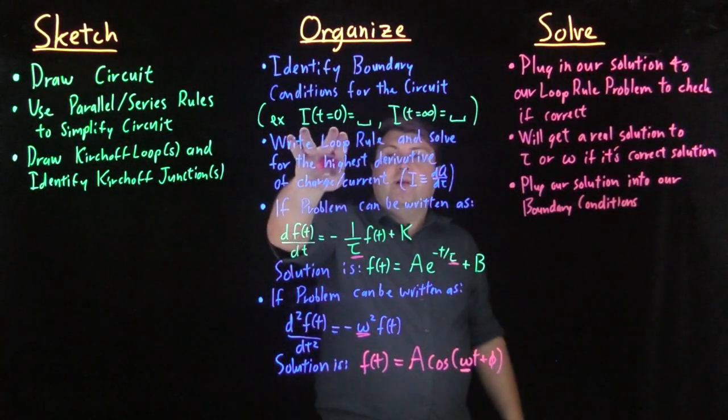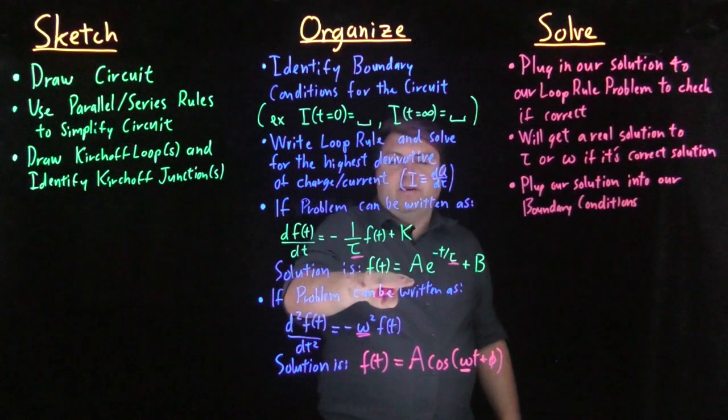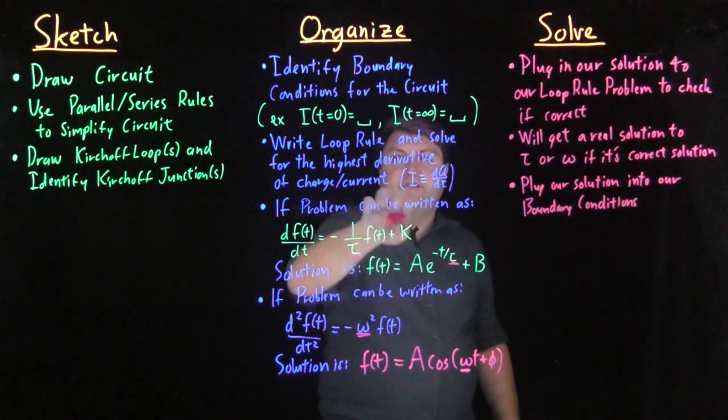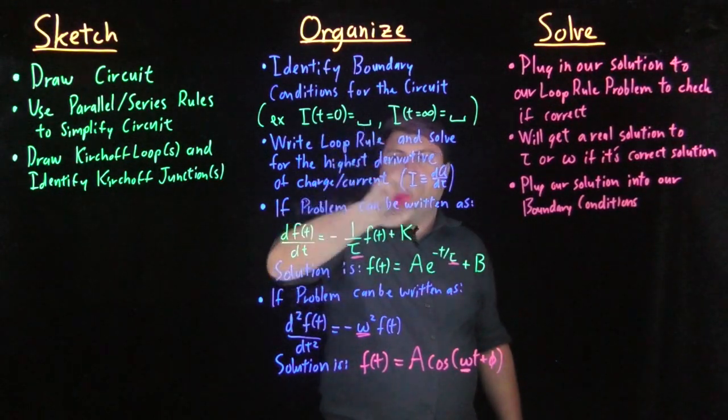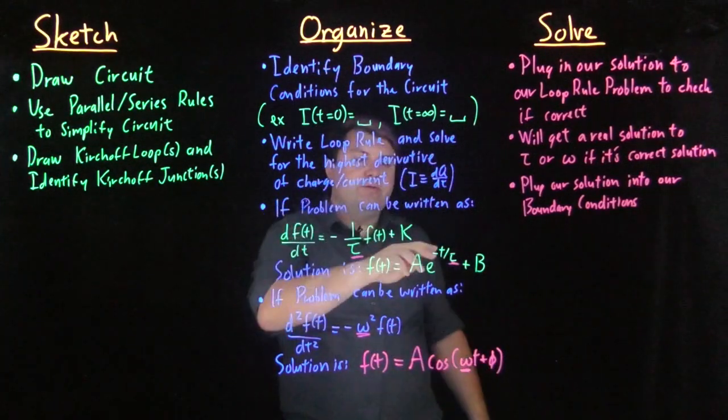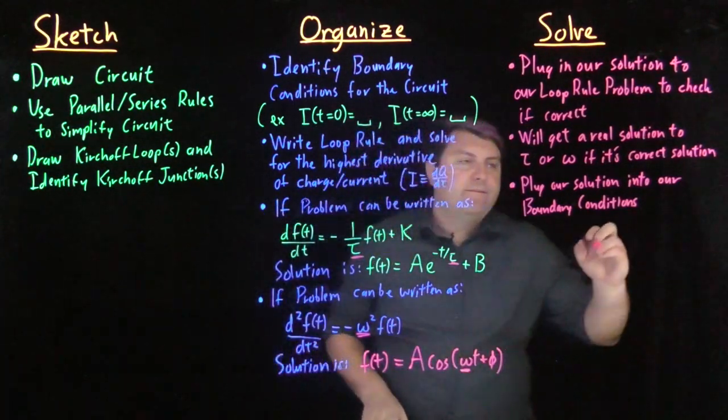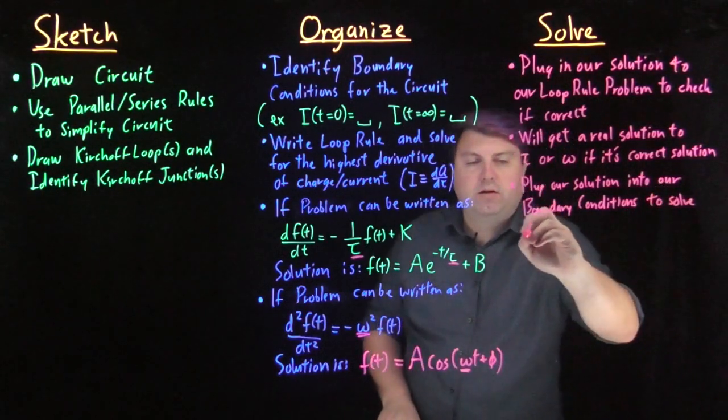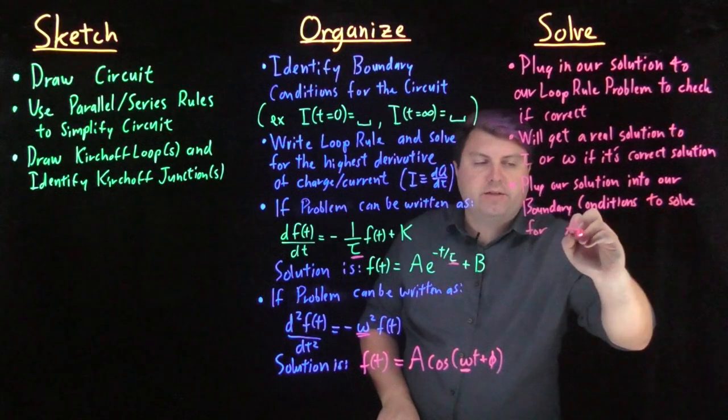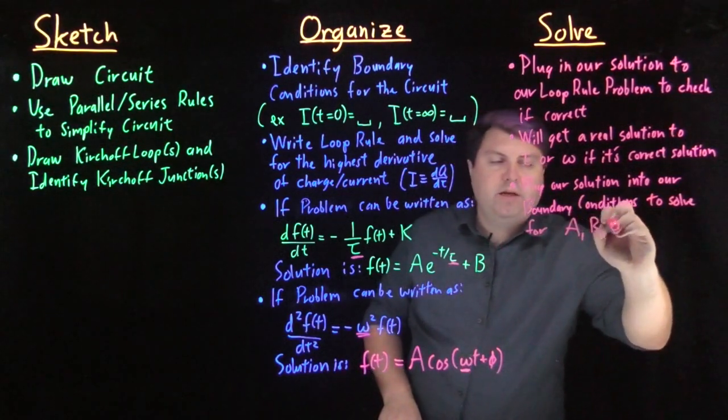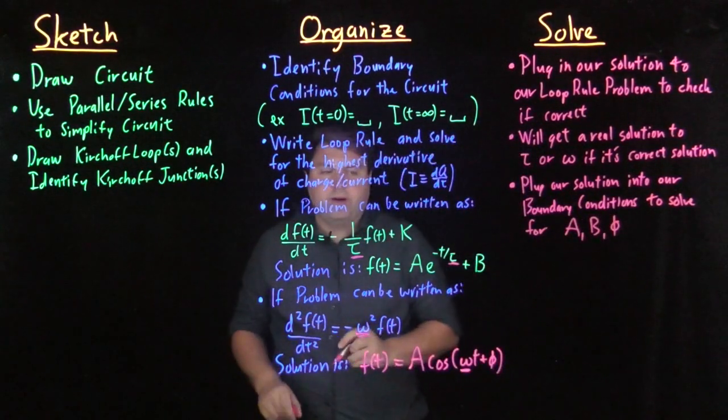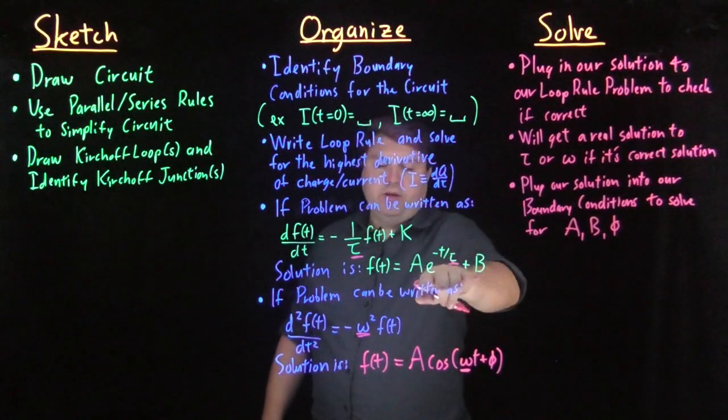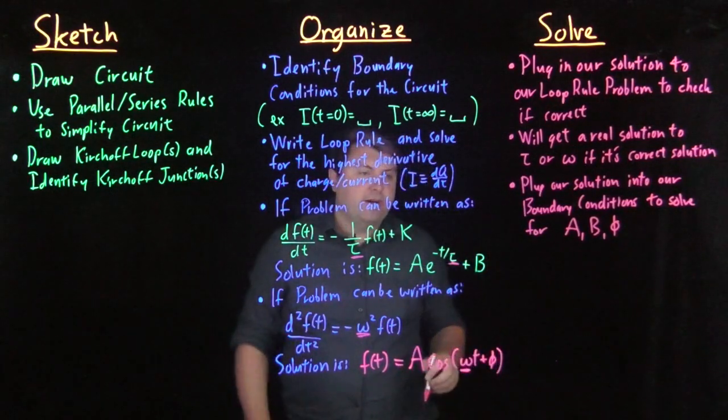And so we will plug in, if we found a current, then we plug in t equals 0 for this one, and we've set it equal to whatever this is equal to, or t infinity for this one. And this will solve for our constants a, b and the phase angle phi, our two constants a and b here, our two constants a and the phase angle phi here.